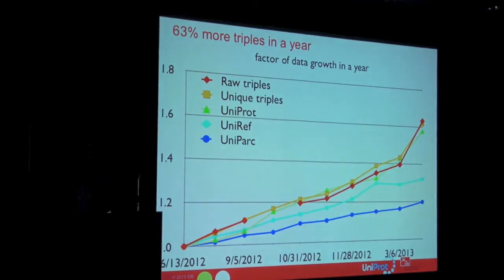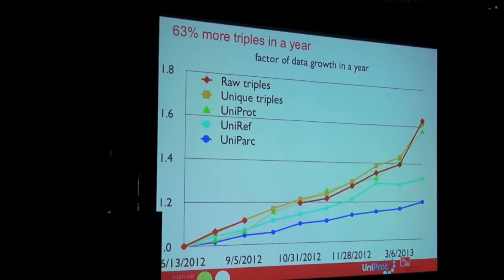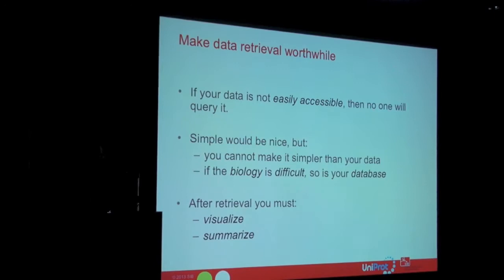If you look at our RDF, we have 60% more triples per year, which means we actually grow by 250% every 18 months. So we're faster than Moore's Law. The thing is, it doesn't really matter how much your data grows, as long as it's interesting.